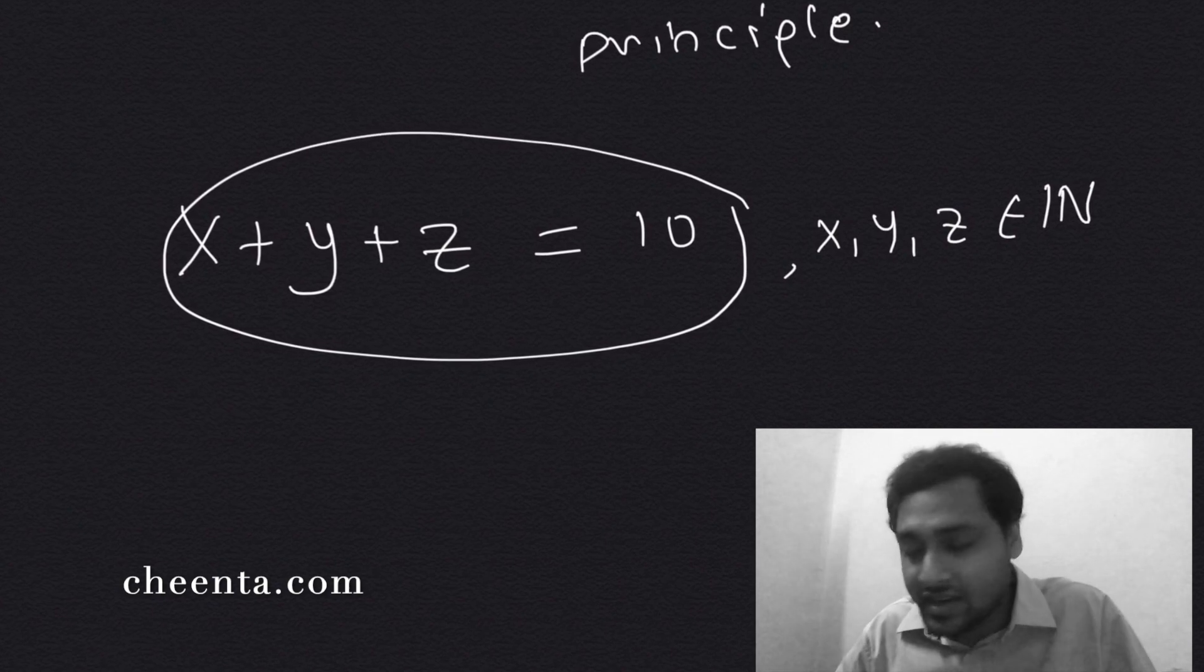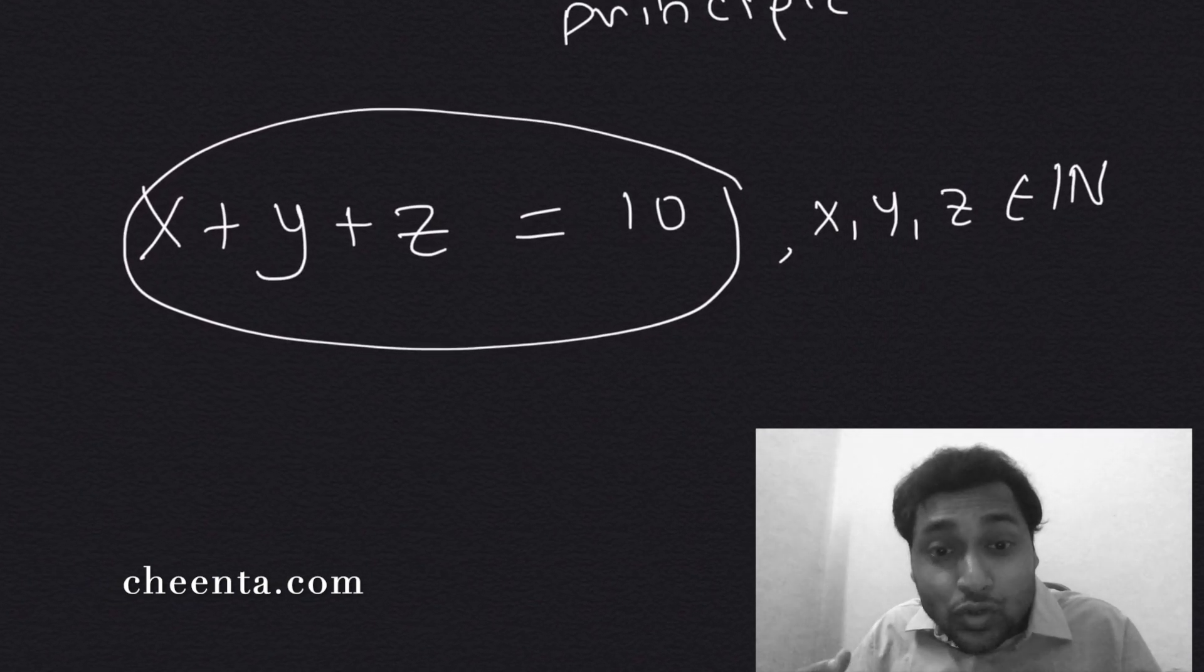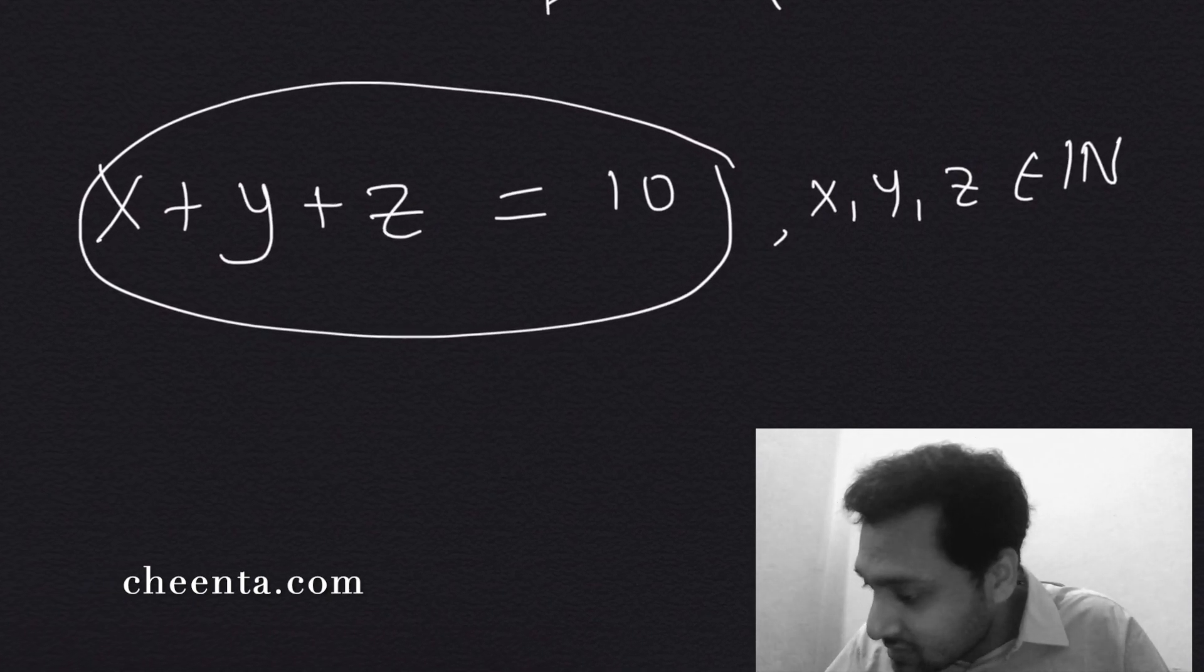So 1, 2, 3, 4, 5, 6, 7, 8, like that. How many such solutions are possible of this particular equation? So this is the question: find the number of solutions.